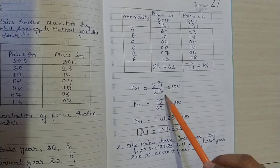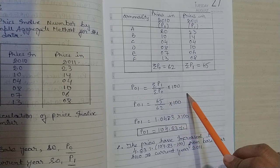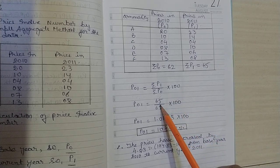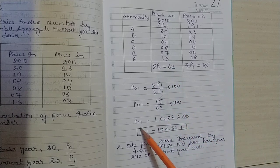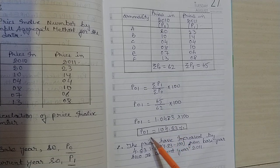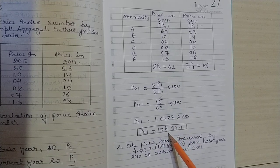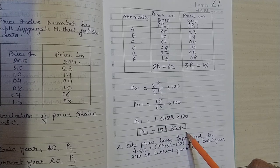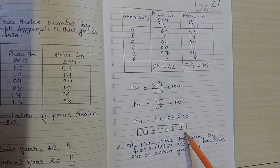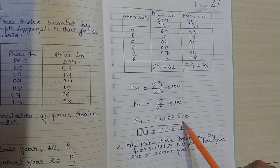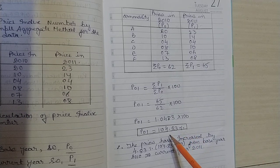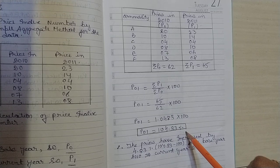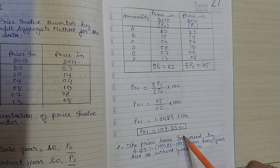Applying the formula: P₀₁ = (ΣP₁ / ΣP₀) × 100 = (65 / 62) × 100. When you calculate and simplify this, you get P₀₁ = 104.83%. Any number multiplied by 100 means you are converting it to a percentage, and price index numbers are always expressed in terms of percentages.